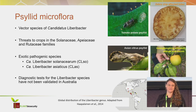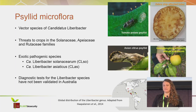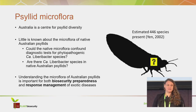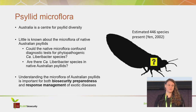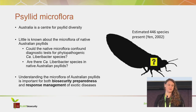Before my project, no Liberibacter species had been detected on mainland Australia. Therefore, the diagnostic tests for Liberibacter species had not been validated in Australia. Because Australia is a centre for psyllid diversity, we were concerned because little is known about the microflora of native Australian psyllids. We were wondering: could the microflora confound the diagnostic tests for the phytopathogenic Liberibacter species, and are there Liberibacter species in native Australian psyllids?